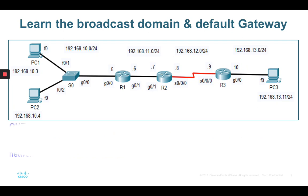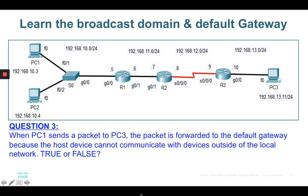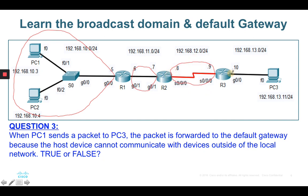Question 3: when PC1 sends a packet to PC3. Drawing the broadcast domains: Router 1 to PC1 and PC2 is one domain; Router 1 to Router 2 is another; Router 2 to Router 3 is another; and Router 3 to PC3 is another. PC1 to PC3 must go through multiple networks, so the packet is forwarded to the default gateway because the host device cannot communicate outside the local network — true or false? The answer is true. Configure the default gateway at Router 1, which is directly attached to PC1, with gateway address 192.168.10.5.